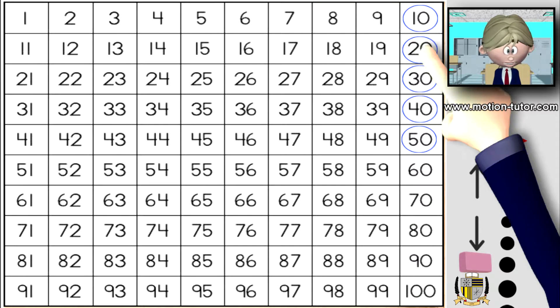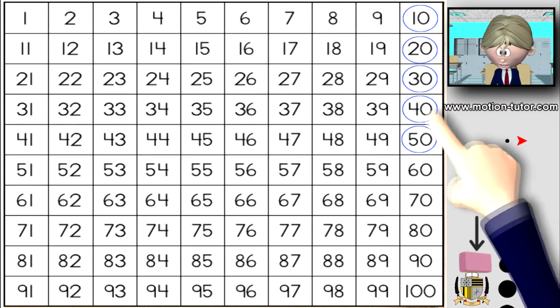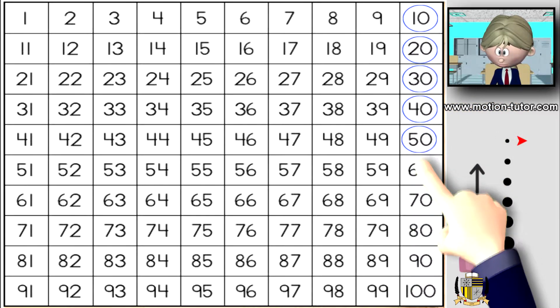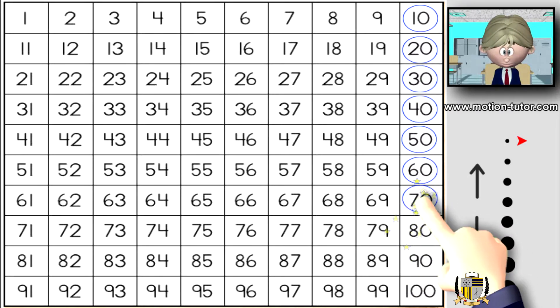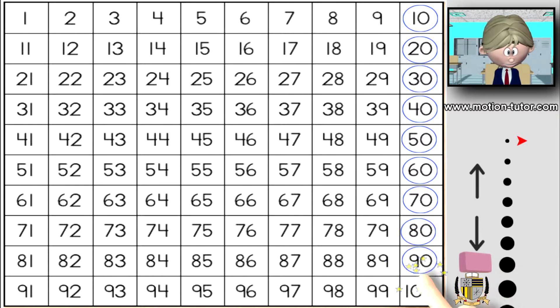10, 20, 30, 40, 50, 60, 70, 80, 90, and 100. That's how we count by tens.